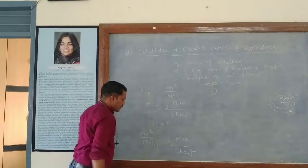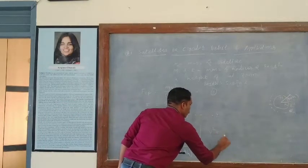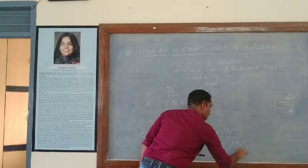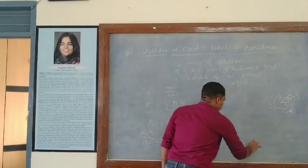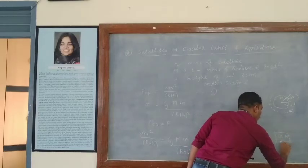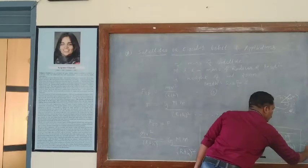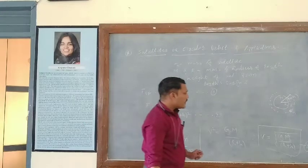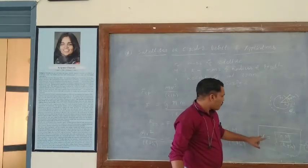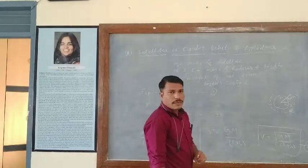Small m gets cancelled and one factor of (R plus H) cancels, giving v squared equal to G times M upon (R plus H). Taking the square root, we have v equal to square root of G times M upon (R plus H). This is equation 3. This equation indicates that v — the orbital velocity of the satellite — does not depend upon the mass of the satellite.